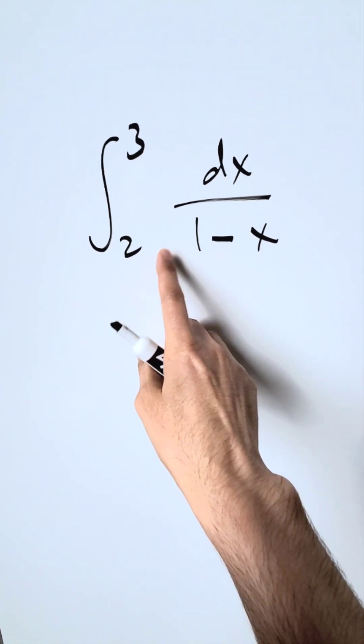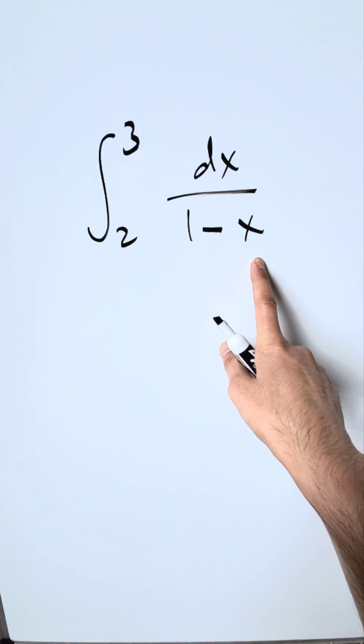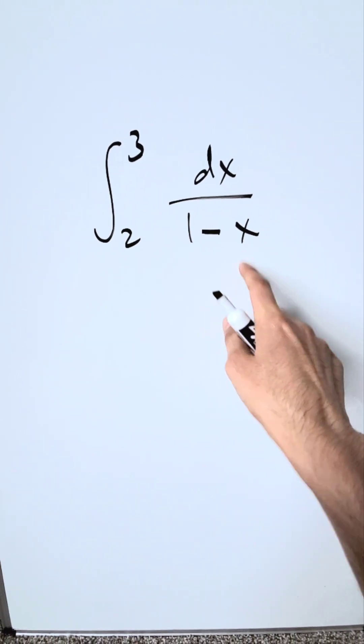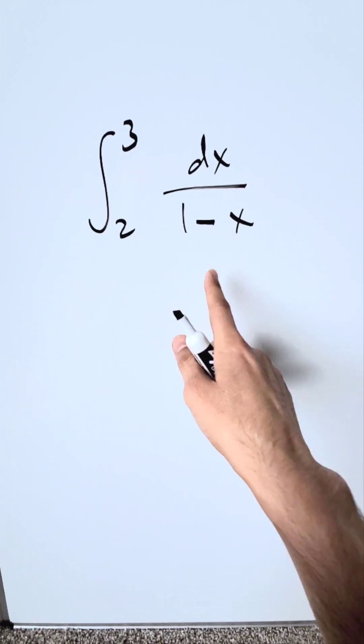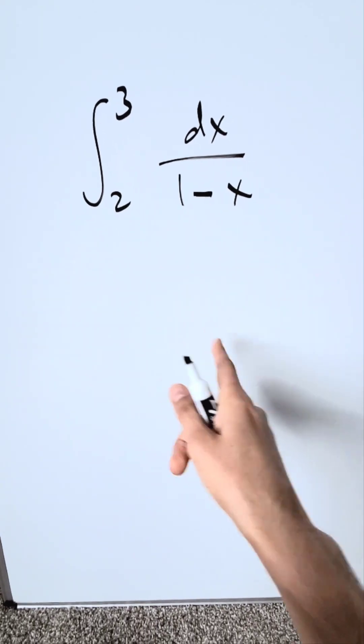Look at this integral. I have from 2 to 3, dx over 1 minus x. The default here will be for me to show the full steps without skipping, because I know there are students who can do this really fast, but there are other students who may struggle. So the default is always to show the full steps without skipping.